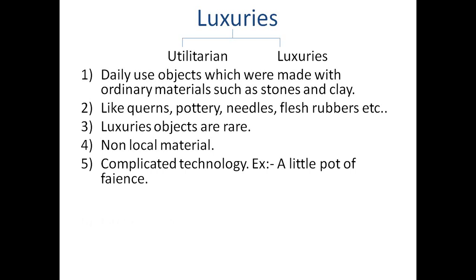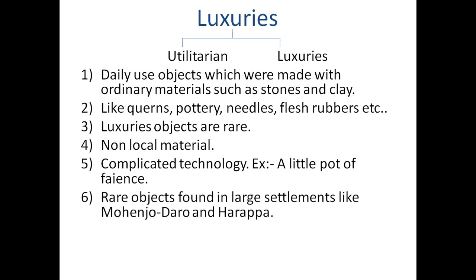Now I am telling you about the example of the little pot called faience. Faience was a small pot made from ground sand and silica mixed with colour and a gum, and then fired. So that was a very complicated technology used to make a faience pot, and these faience pots were found in very few places.